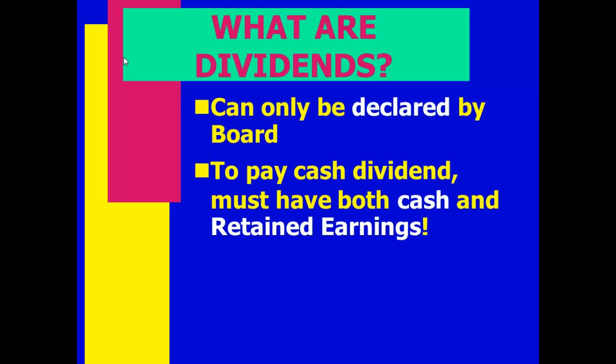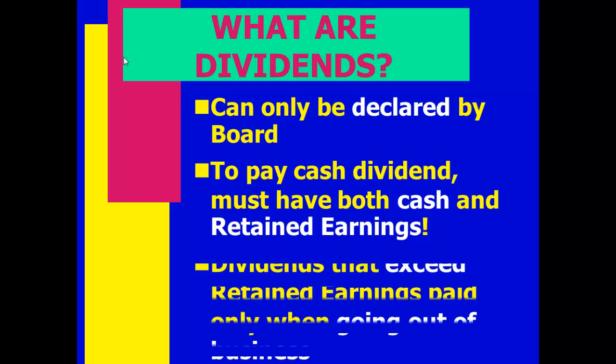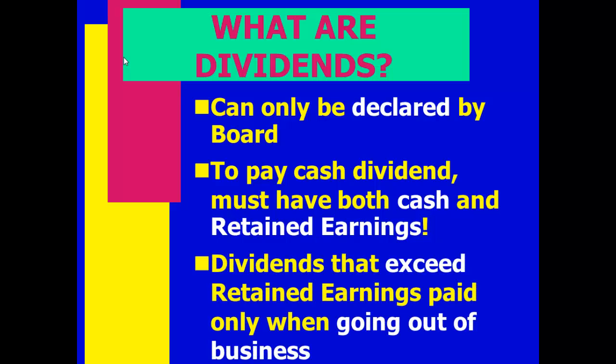Dividends have to be declared by the board — they don't happen automatically, they must be declared. In order to pay a cash dividend, you've got to have cash and you also have to have retained earnings. We closed dividends out to retained earnings back in Chapter 4. We can only pay dividends exceeding retained earnings when going out of business — those are called liquidating dividends.